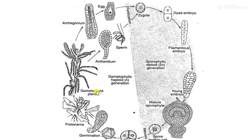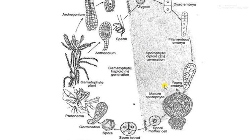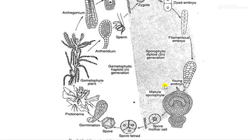The life cycle alternates between two generations: the gametophytic and the sporophytic. Since these two generations are morphologically different and alternate between one another, we call this life cycle a heteromorphic alternation of generations.